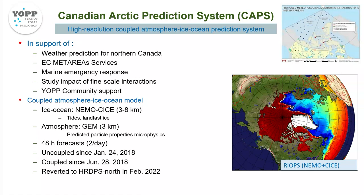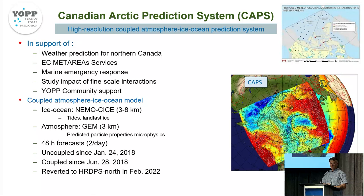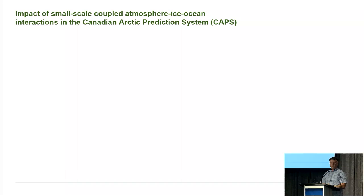This brings me to CAPS. CAPS is a system built to look at fine-scale interactions like those I discussed for the Gulf of St. Lawrence system, and also to put out there for community support to look at this more broadly across the Arctic. The system uses the REOPS system I mentioned - covering the Atlantic, Arctic, and North Pacific - and couples on top of this a three-kilometer pan-Arctic grid for the atmosphere. The system was put in place in January 2018, coupled shortly after that, and was discontinued not too long ago.